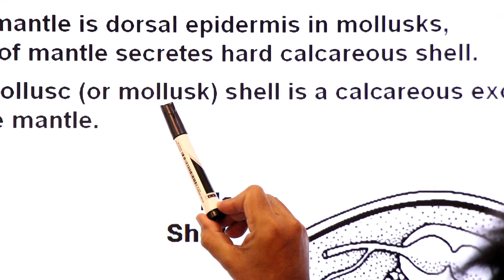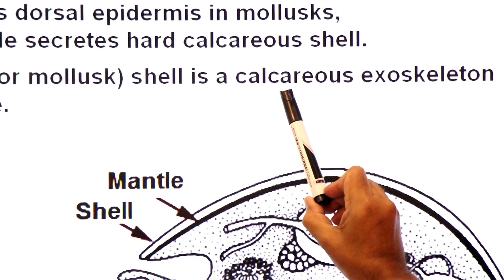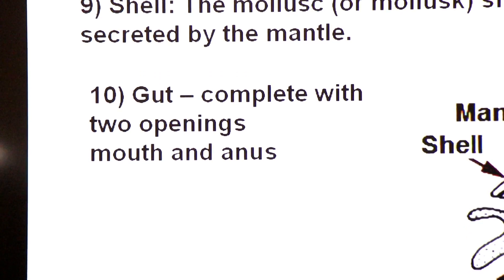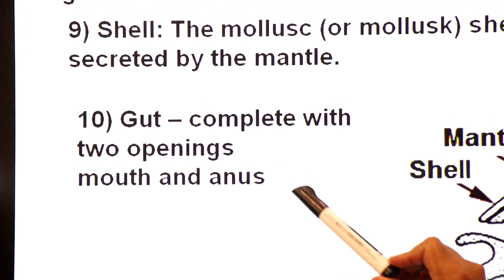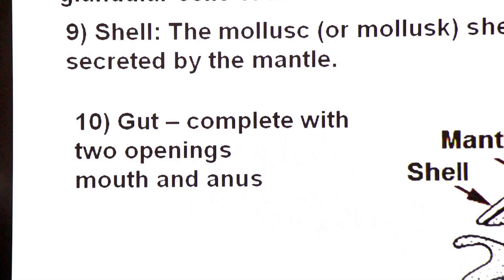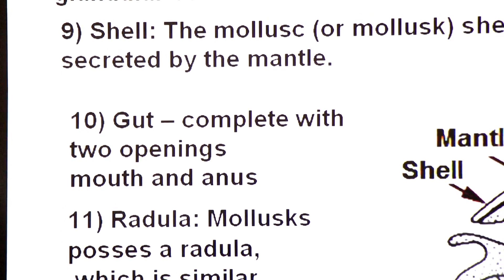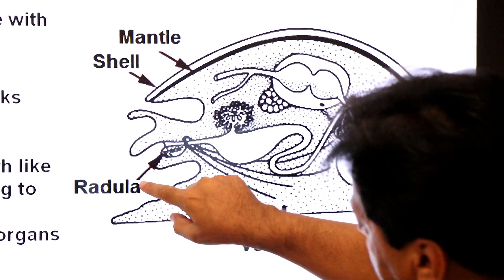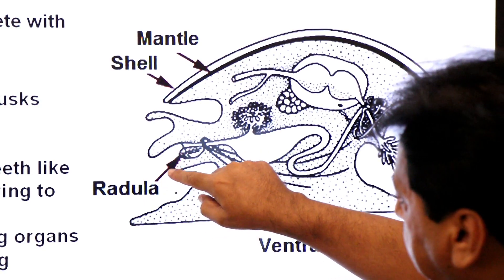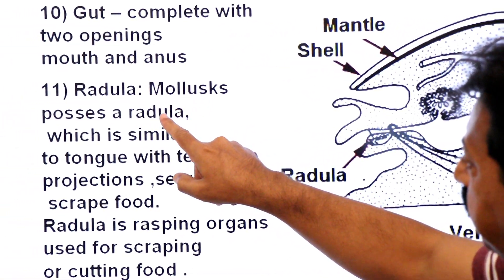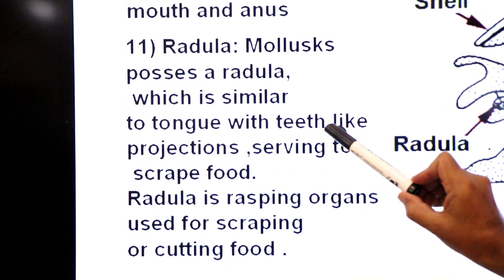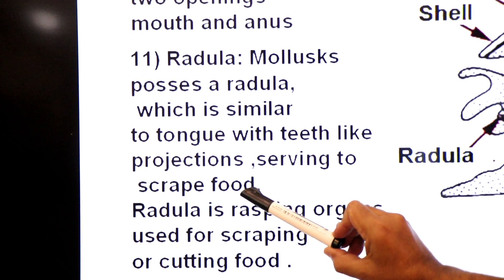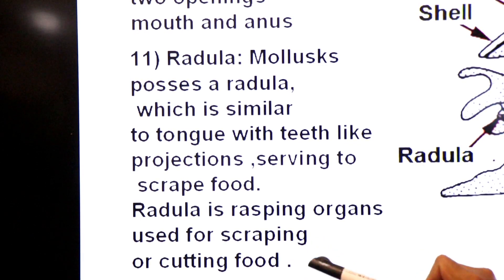The mollusk shell is calcareous, made up of calcium carbonate — an exoskeleton secreted by the glandular cells of the mantle. Their gut is complete with two openings: mouth serving for ingestion and anus for egestion. In the buccal mass there is a radula. Mollusks possess a radula which is similar to a tongue with teeth-like projections, serving to scrape food. The radula is a rasping organ used for scraping or cutting food.